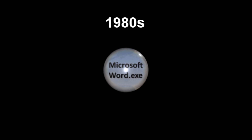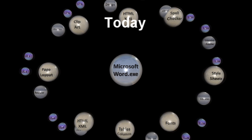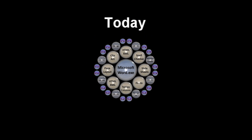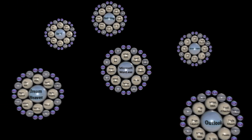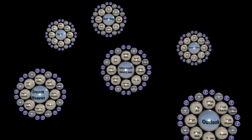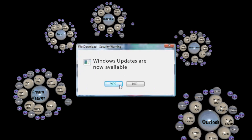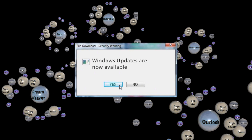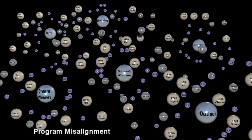Back in the 1980s, when disk defragmenters were invented, programs were made up of a single large file on the hard drive. But things have changed since then. Today, programs are much more complex and made up of hundreds of interdependent files that need to be read from the hard drive each time a program starts. Programs work fastest when all these dependent files are aligned together on the hard drive. But then Windows and software updates happen, causing these aligned files to drift all over the hard drive platter, causing program misalignment, which slows everything down.